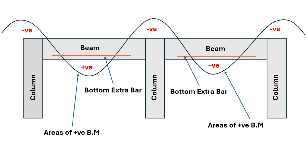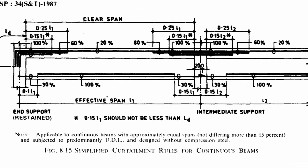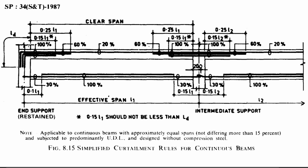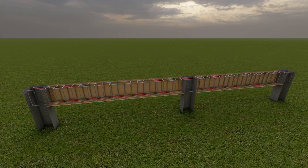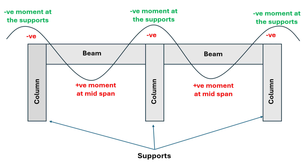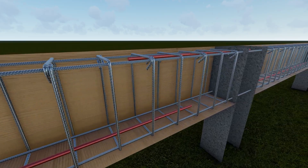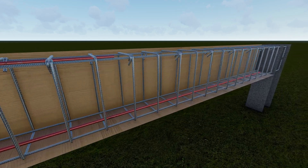But in some beams, you don't need these extra bars, and we will explain that in the later part of this video. Now let's get to the calculation part using the SP34 codebook. We will be using a 2-span continuous beam as our example. According to SP34, extra bars must cover regions with high moments. For a continuous beam, negative moments occur over the supports, while positive moments occur at mid-spans.